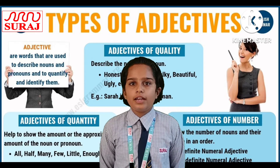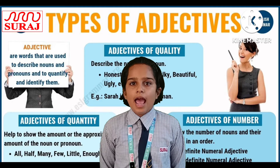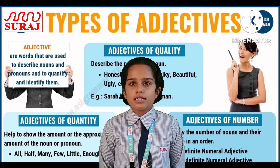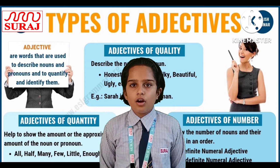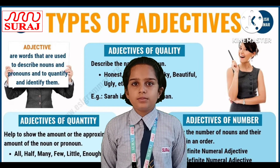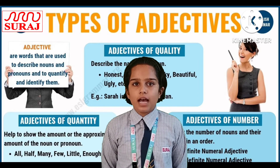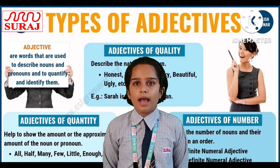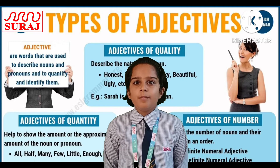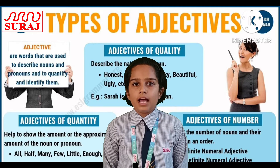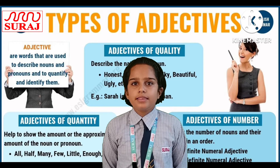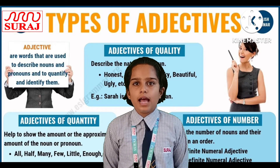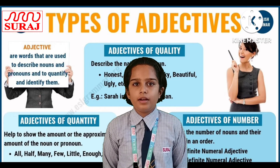Third, adjective of number. An adjective of number tells us how many of a thing is meant. Example: I saw many dogs at the gate — 'many' is the adjective of number. They see few movies — 'few' is the adjective of number.